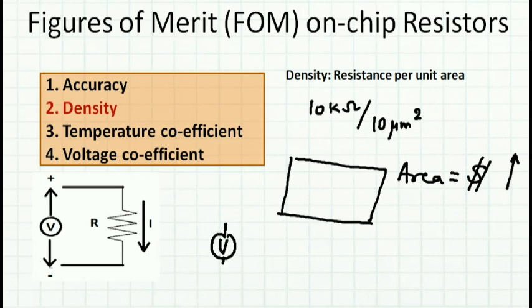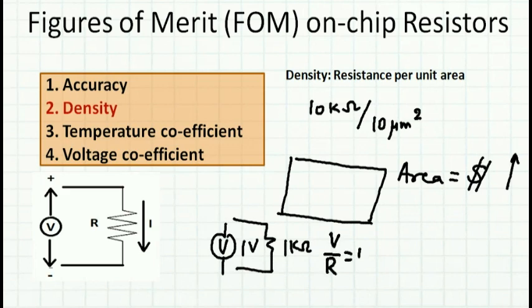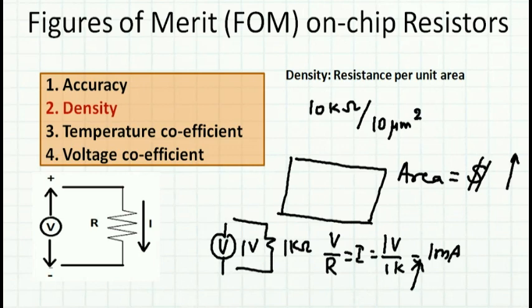Why do we need large resistance? If I apply 1 volt across a 1 kilo ohm resistor, the current is V/R = 1 volt divided by 1 kilo ohm = 1 milliamp. One milliamp is a lot of current; in a handheld or mobile device the battery drains away very fast. So I increase my resistance to slow down power consumption, but area increases cost. Therefore we need very high density of resistors to save both cost and power.